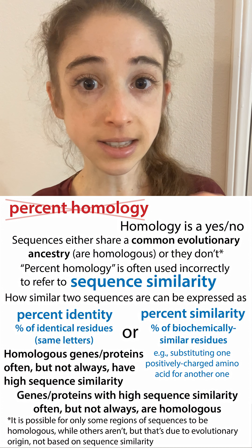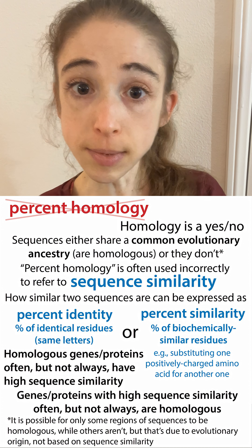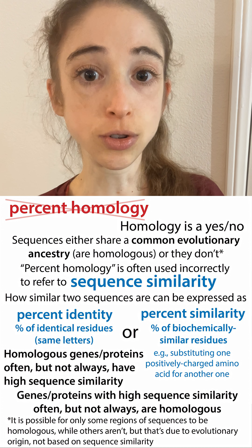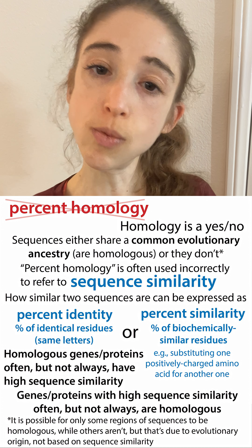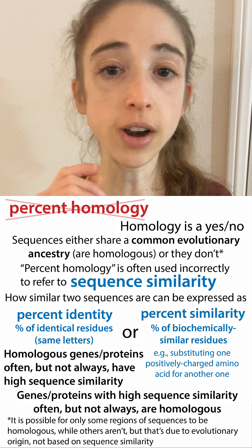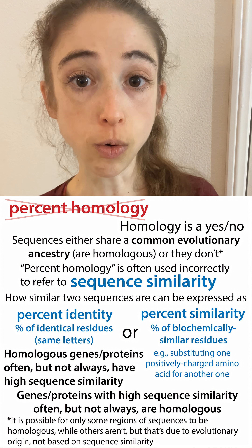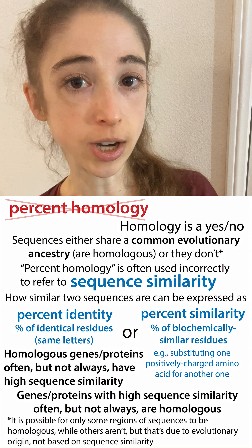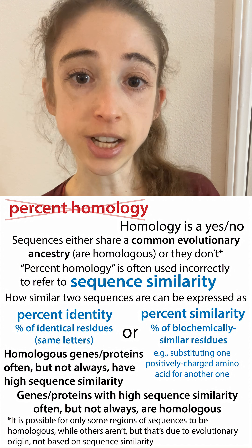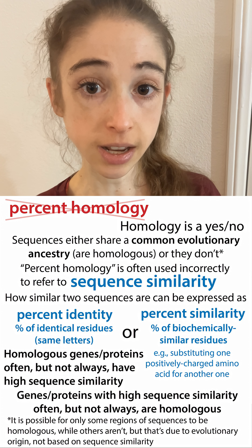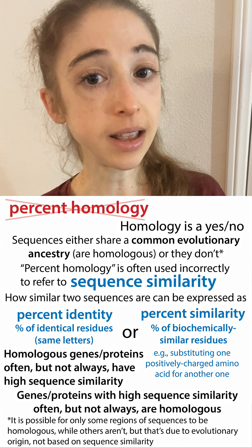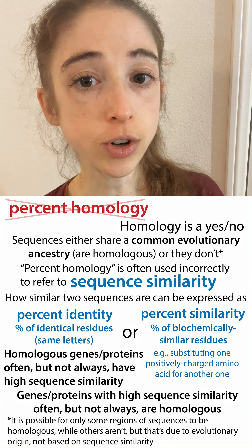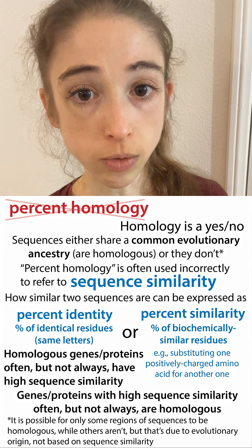Both percent identity and percent similarity can tell you how similar two proteins are, but they can't directly tell you whether they share a common genetic origin. And that common genetic origin question is exactly the question being asked by homology — but it's either a yes or a no: they share a common genetic origin or they don't.